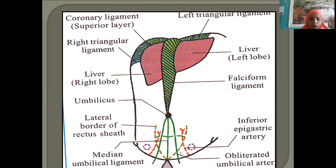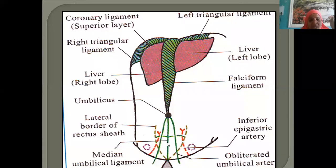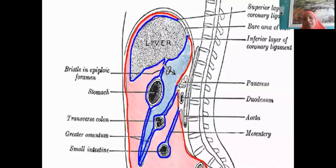In total we have five thickenings: one median umbilical ligament in the midline, two medial umbilical ligaments on either side, and two lateral umbilical ligaments — five thickenings of the peritoneum in the anterior wall of the abdomen, extending from the pelvic region to the umbilicus.